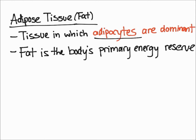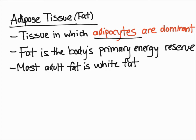Fat is also the body's primary energy reservoir, and stored fat is constantly being turned over, with an equilibrium between energy storage and energy use. Stored fat is constantly being used and then remade if you're eating the right amount of calories each day. Most adult fat is called white fat.